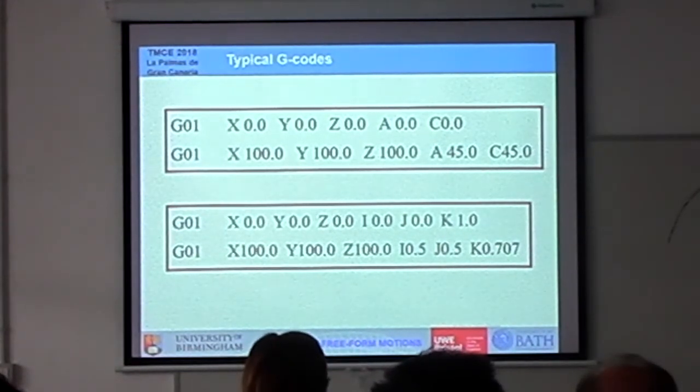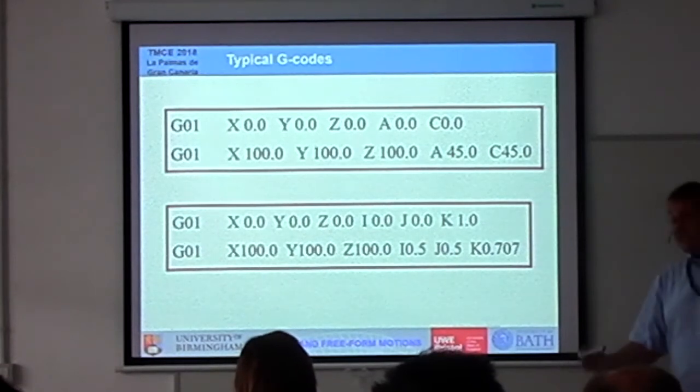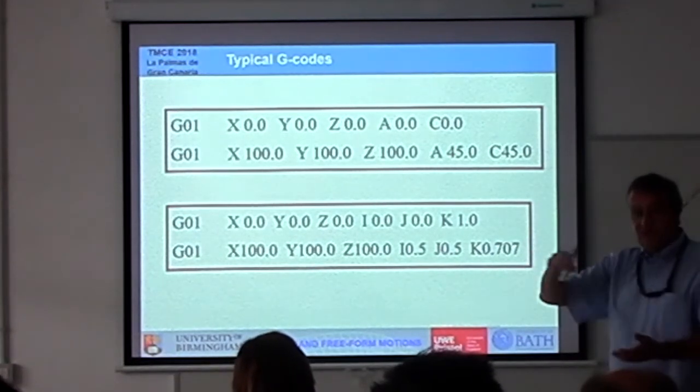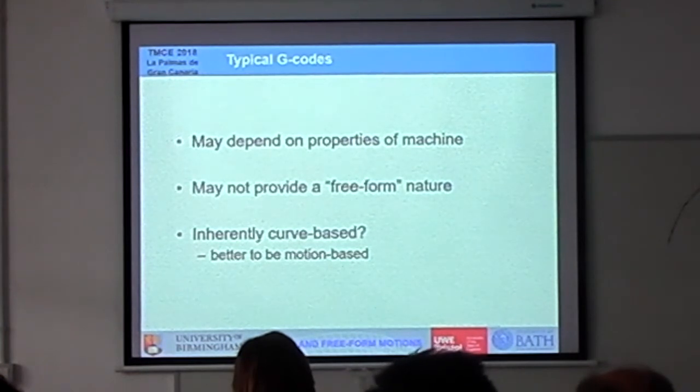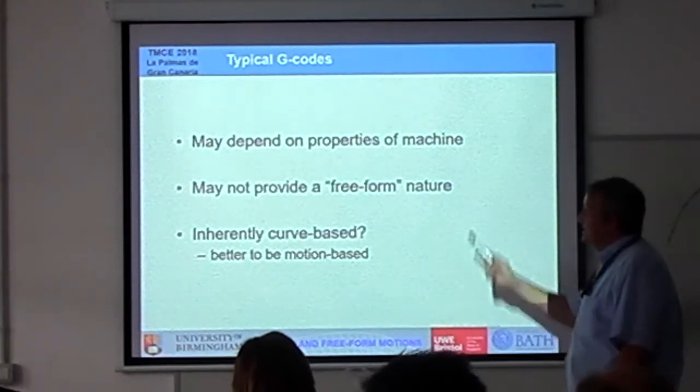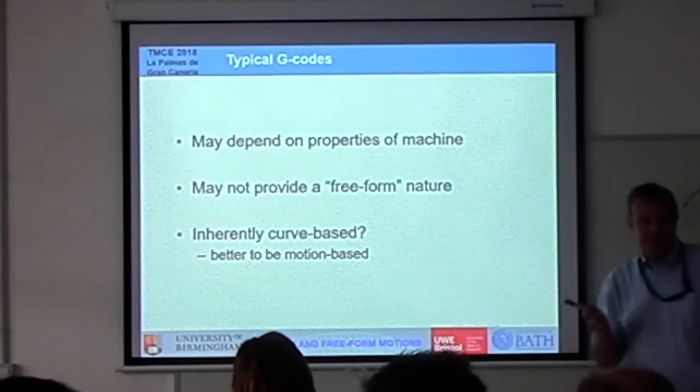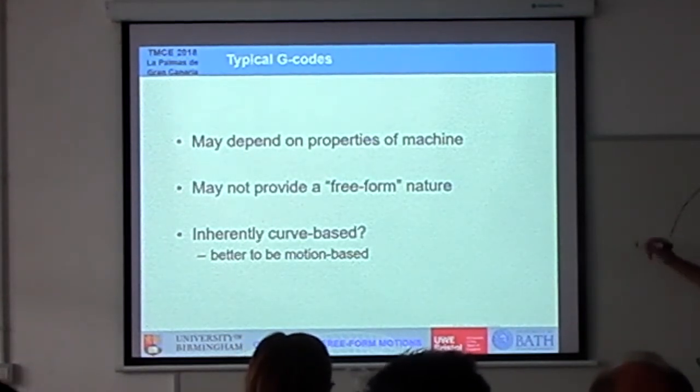In three dimensions, X and Y and Z, very complex parts. We'll have four or five, and now even six different drives. We've got more and more G-codes coming in here to produce motions. The issue we get is some of these G-codes are machine dependent. We may not know if it's free form and it's processed. And inherently in nature, it's sort of curve-based. Well, we want it to be motion-based as possible.